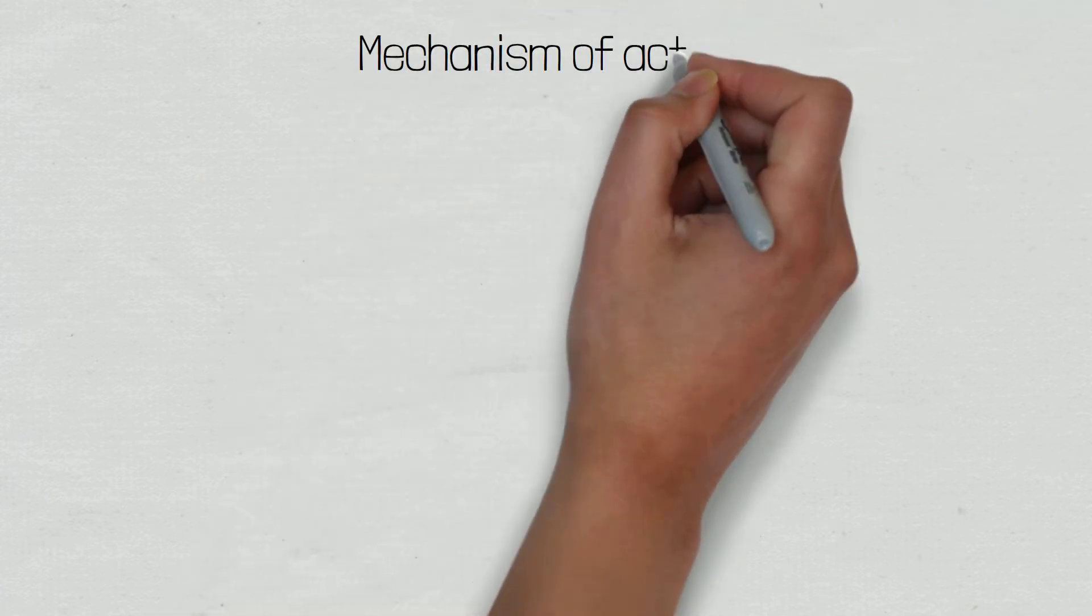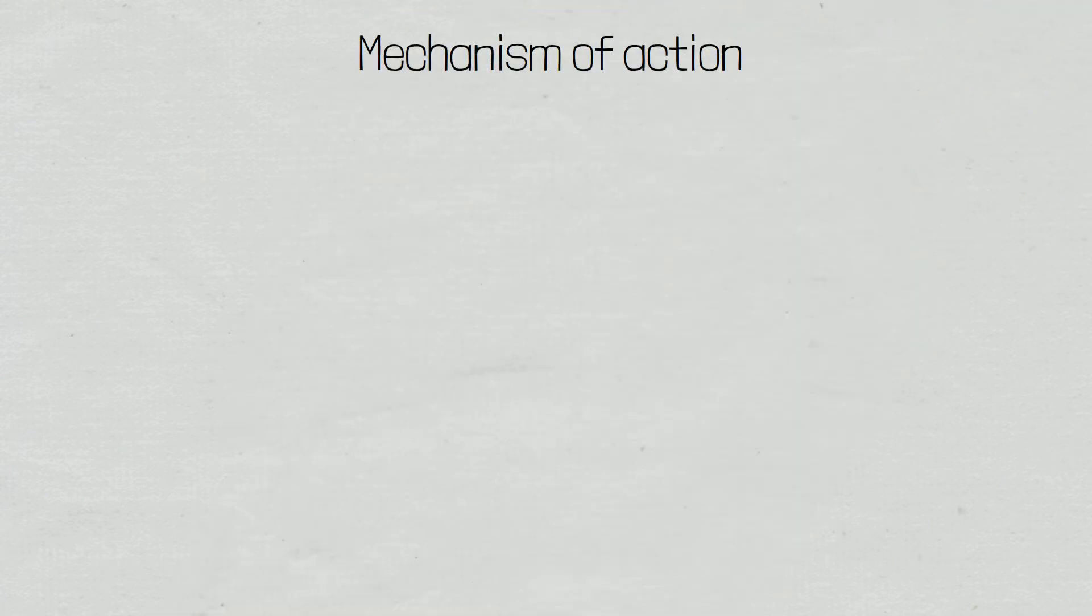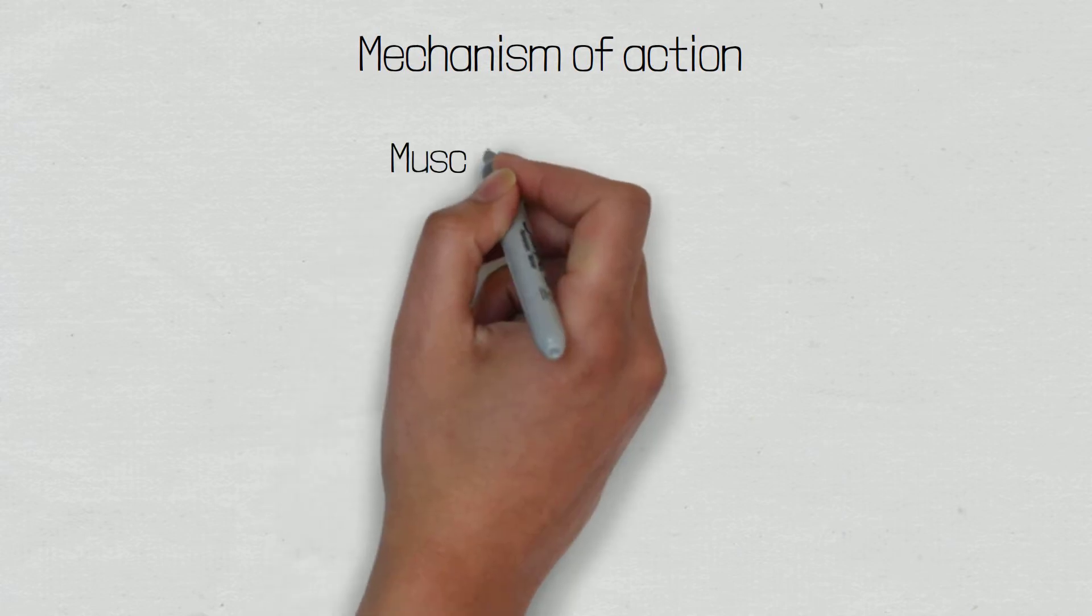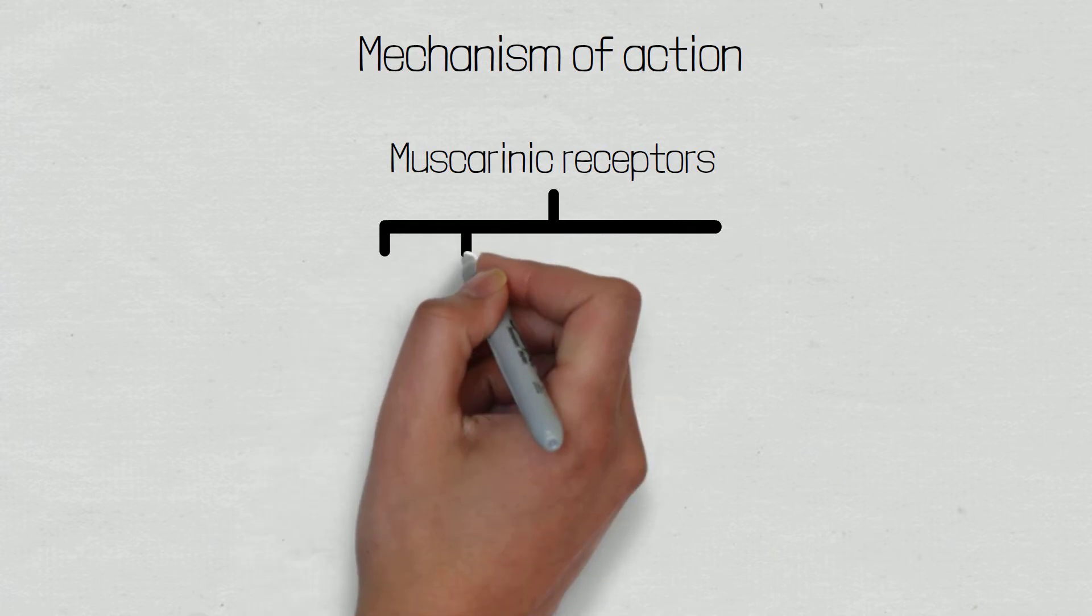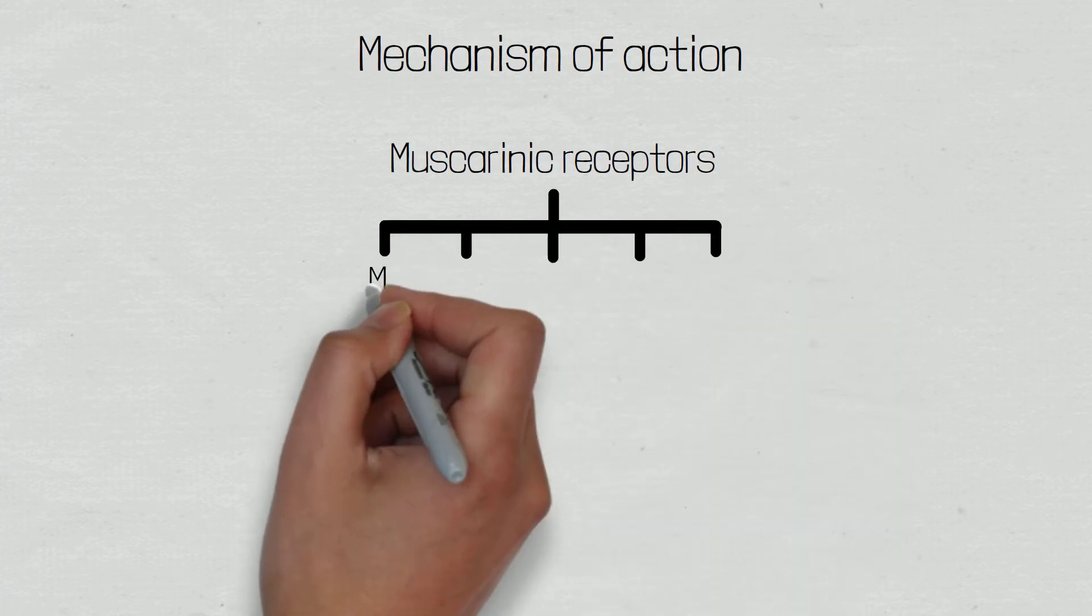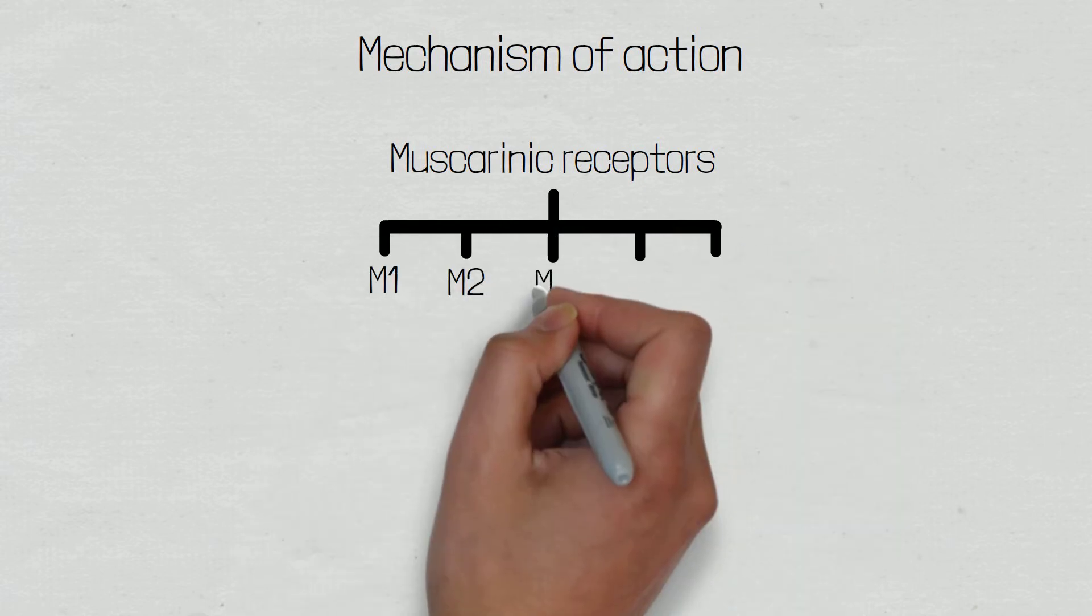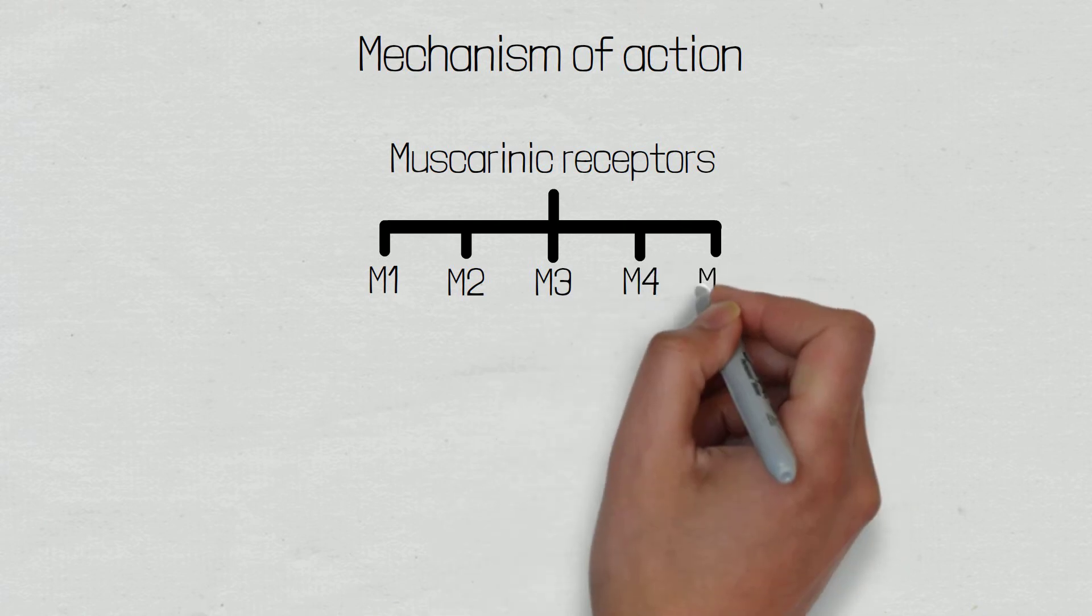So let's look at the mechanism of action of ipratropium bromide. There are five types of muscarinic receptors, which include M1, M2, M3, M4, and M5.